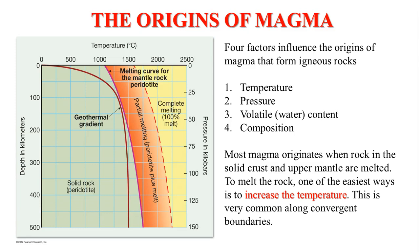What conditions influence the origins of magma that basically form these igneous rocks? There are four primary factors: temperature, pressure, volatile content — specifically water content — and composition. One of the simplest things to explain with the origins of magma is temperature.